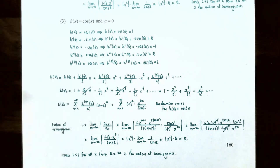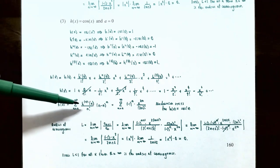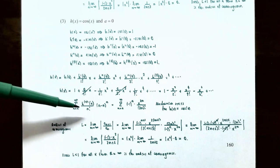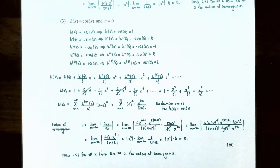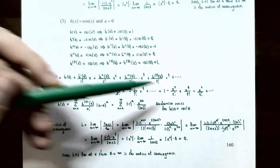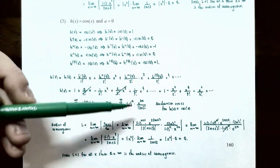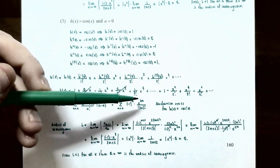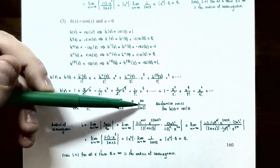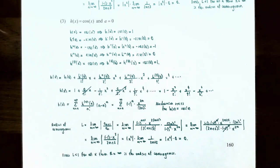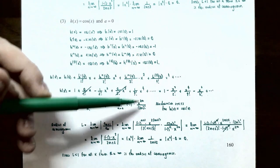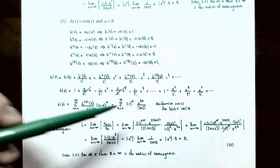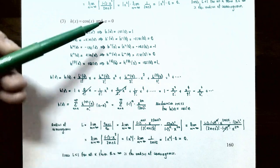The Maclaurin series for cos(x) is the sum from n=0 to infinity of (-1)^n · x^(2n) / (2n)!. The signs alternate with (-1)^n, only even powers x^(2n) survive, and the denominator is (2n) factorial. When n=0 the first term is x^0=1, when n=1 we get -x²/2!, and so on. This is a Maclaurin series since a=0.